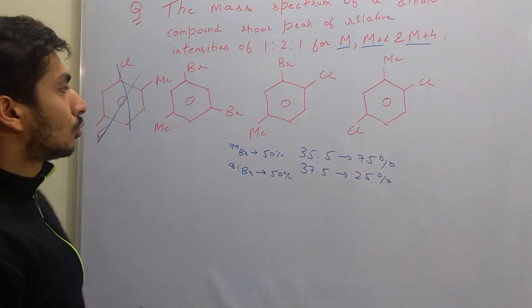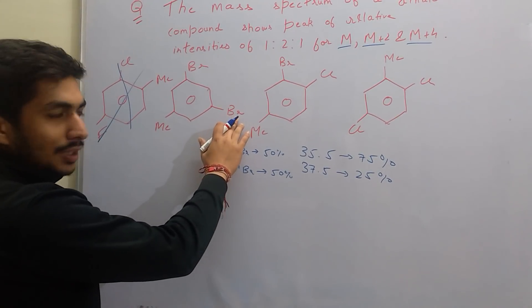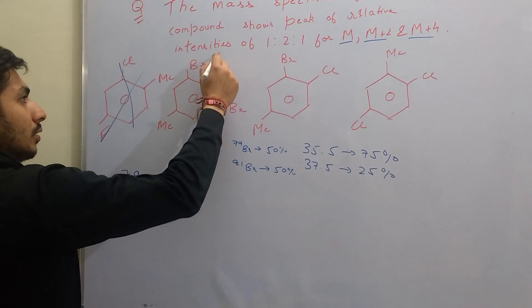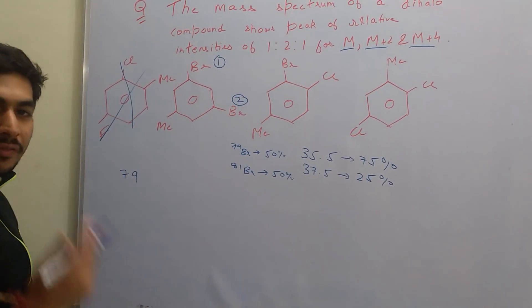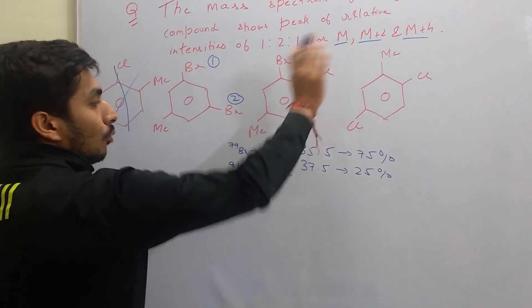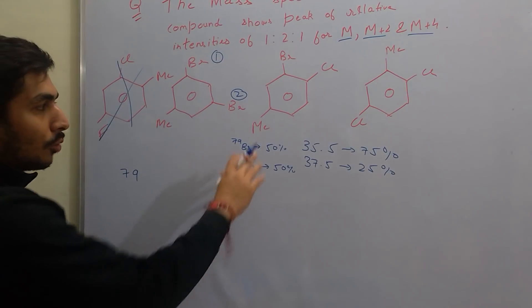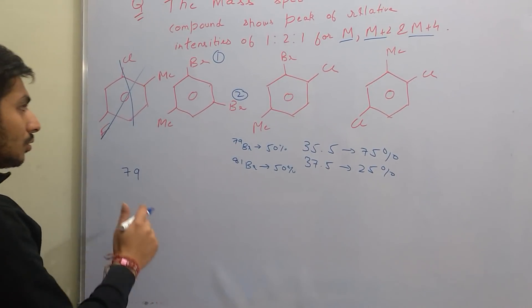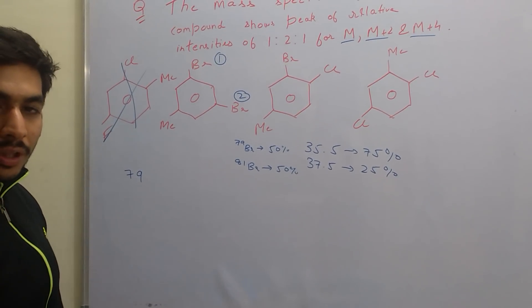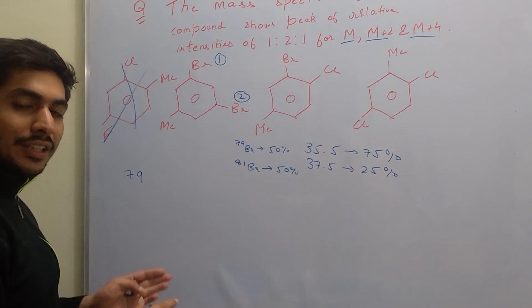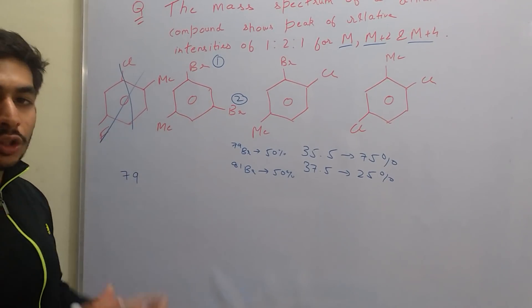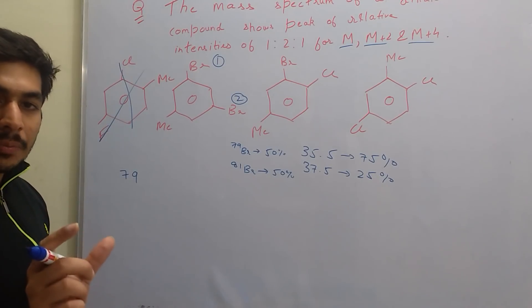For the molecular ion peak of the two-bromine compound, both bromines have to be bromine-79. In permutations and combinations, when 'and' comes it means multiplication, and when 'or' comes it means addition. So the first bromine has to be 79 AND the second bromine also has to be 79, meaning we multiply. The abundance of bromine-79 is 50%, so we get 0.5 × 0.5 = 0.25.